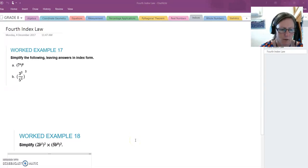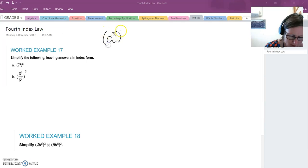The fourth index law involves raising a power to another power. So for example, if I had a cubed in brackets raised to the power of 4, I'll do this the long way and show you then how we come up with the fourth index law.